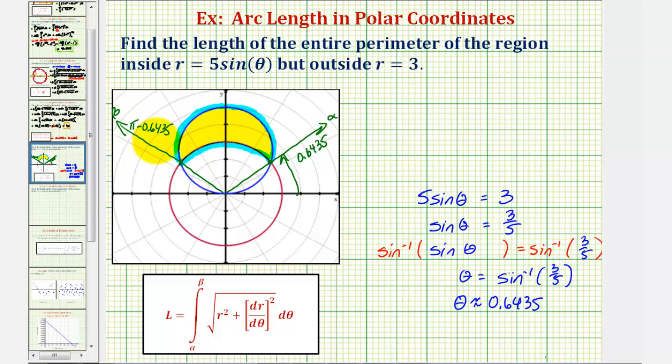But notice how this region and perimeter are symmetrical across the y axis. So instead of using this angle for angle beta, what we could do is integrate from alpha to pi over two radians, this angle here.